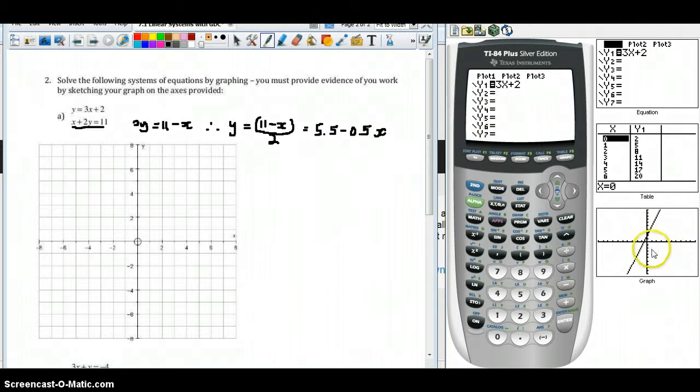On the bottom in the screen view here, this has graphed our function. Our second function, y equals 5.5 minus 0.5x. The alternative is to enter it with parentheses: 11 minus x, divided by 2. It's important that we use parentheses when dividing because we want both of the terms to be divided.